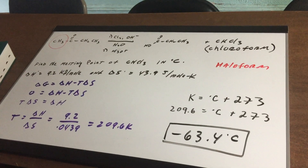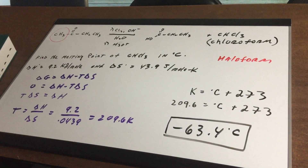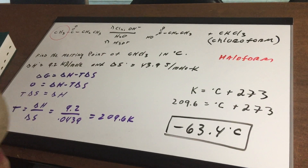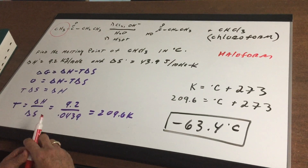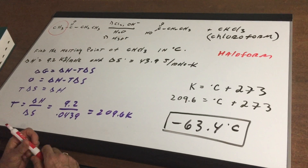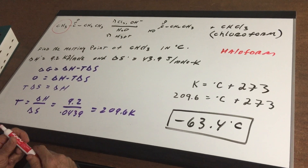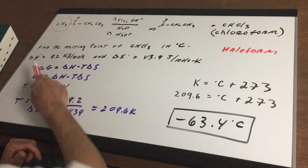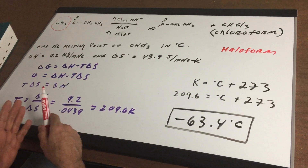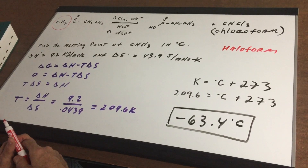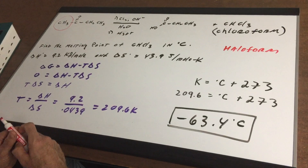What I want to do is take this final product, chloroform, and find its melting point in degrees Celsius. I give you the thermodynamic values: delta H being 9.2 kilojoules per mole and delta S being 43.9 joules per mole Kelvin. The minute you see a problem involving delta H and delta S, you first write up the Gibbs-Helmholtz equation: delta G equals delta H minus T delta S.